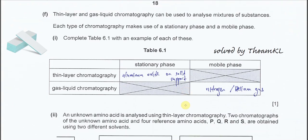Part F. Thin-layer and gas-liquid chromatography can be used to analyze mixtures of substances. Each type of chromatography makes use of stationary phase and mobile phase. Part 1: Complete table 6.1 with an example of each. For thin-layer chromatography, stationary phase normally uses a solid support. The solid support is a glass plate, and we coat a layer of aluminum oxide or silicon dioxide on the glass plate. This layer of oxide is used as the stationary phase for the separation.